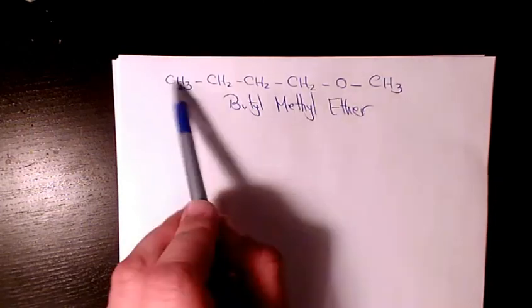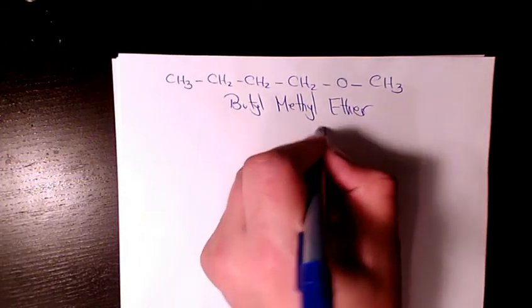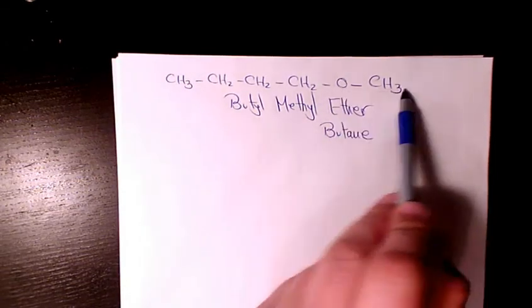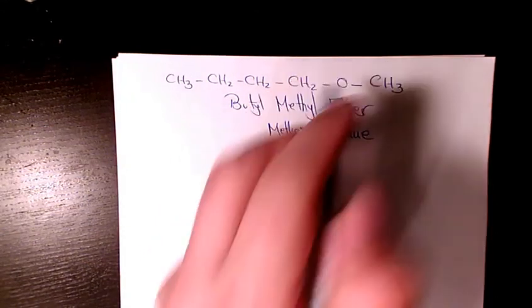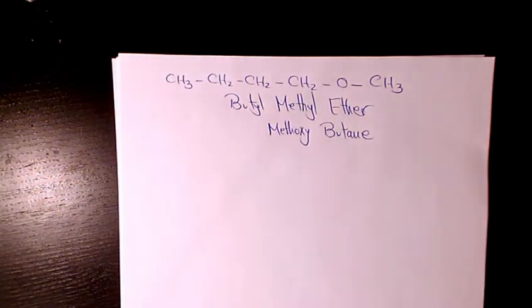For the IUPAC name, we have the longest chain (one, two, three, four carbons again), so it's going to be butane. And here we have methoxy, which is an alkoxy group. So we have methoxy butane. There are two different names for this compound.